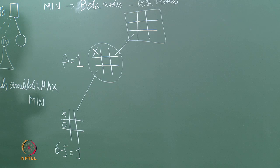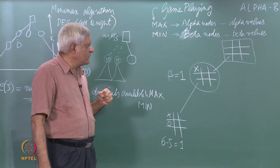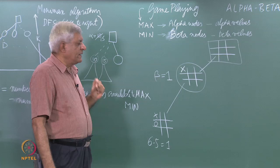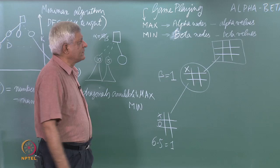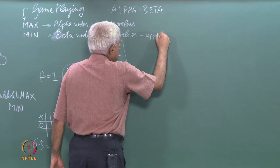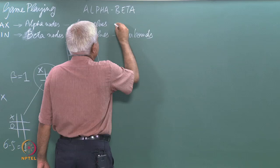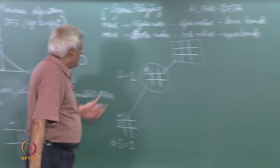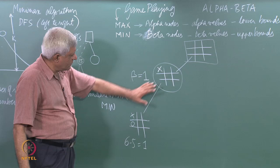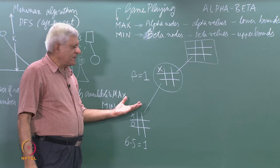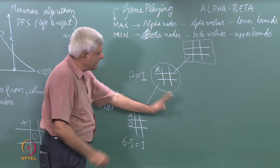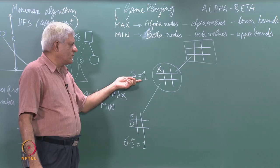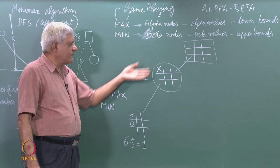Beta values are upper bounds on the values that min nodes can take, and alpha values are lower bounds. Once a min node has seen a value of 1 from a left child, it is only looking for lower values from remaining children. So this beta value — the partial value from the first child — is an upper bound; the final value can only be 1 or less.